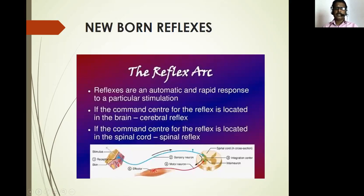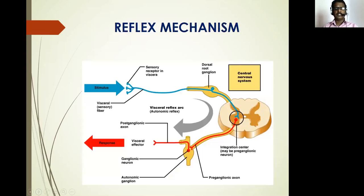These are the reflex arc. The reflexes are an automatic or rapid response to a particular stimulation. If the command center for the reflex is located in the brain, it is cerebral reflexes. If the command center's reflex is located in the spinal cord, it is spinal reflexes. When the stimulus reaches the sensory receptors in viscera, it reaches the dorsal root ganglions of the spinal cord and comes to the response by the visceral effector.